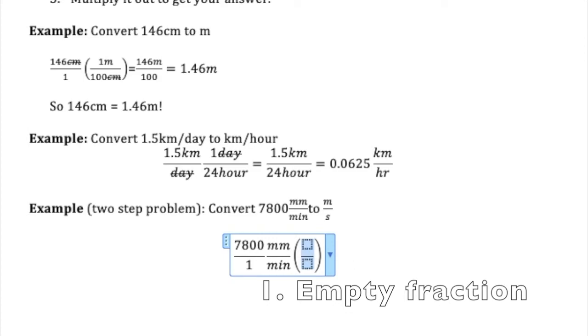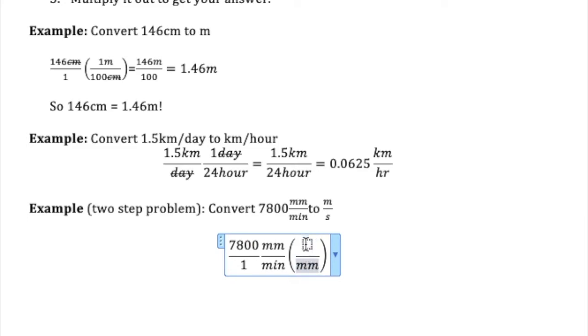And then you decide what units you want to cancel. So in this case, we've got two units to cancel. We want to cancel the millimeters and change them to meters. And we want to change the minutes and put them into seconds. So let's change the millimeters first. So I'm going to put millimeters on bottom, and I'm going to put meters on top. That'll cancel the millimeters and give me meters.